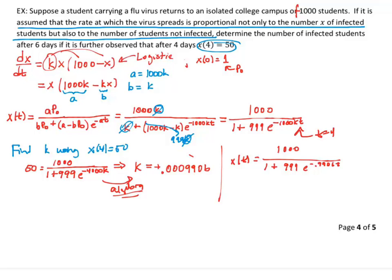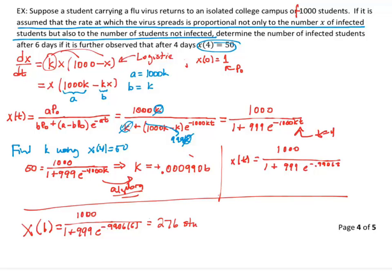So this gives me a solution equation for my initial value problem that's based on the logistic model. Now the question is how many students are infected after six days? So last thing we're going to do here is find x of 6. x of 6 is equal to 1,000 divided by 1 plus 999 e to the negative 0.9906 times 6. So if I work all that out, I end up with approximately 276 students. So that's the result of the mathematical model that we've come up with there.